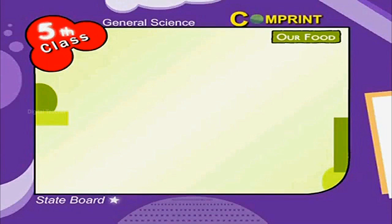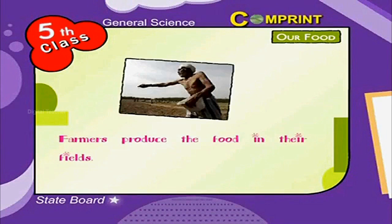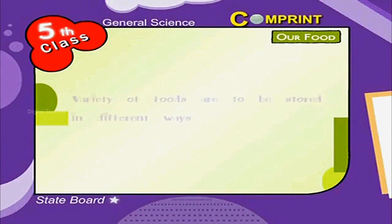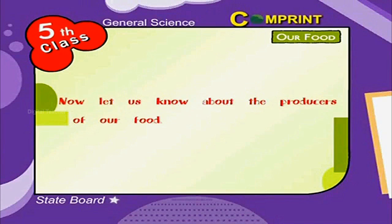Our Food. Food is essential for all living beings. Farmers produce the food in their fields. Variety of foods ought to be stored in different ways. Now let us know about the producers of our food.